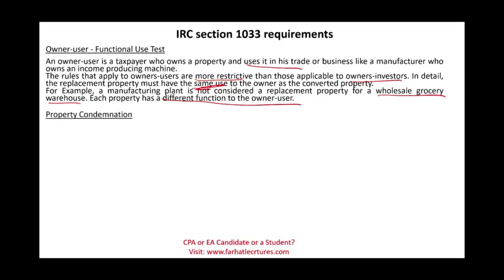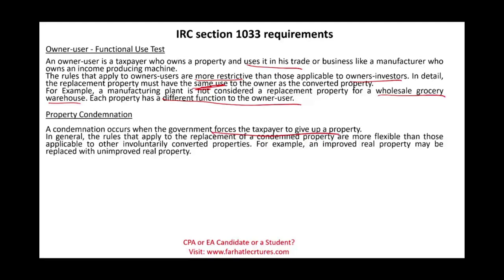Property condemnation is when the government takes over your asset by force through eminent domain — for example, to expand a highway or build an airport. The rules that apply to replacement of condemnation property are more flexible, because the government is forcing you to give up the property. For example, improved real property may be replaced with unimproved real property.